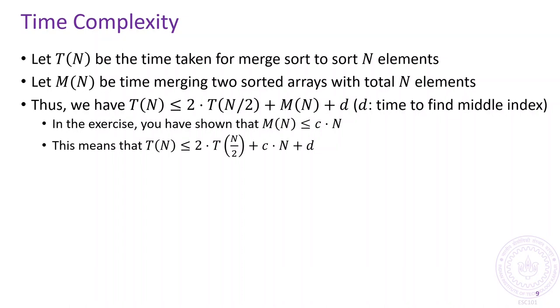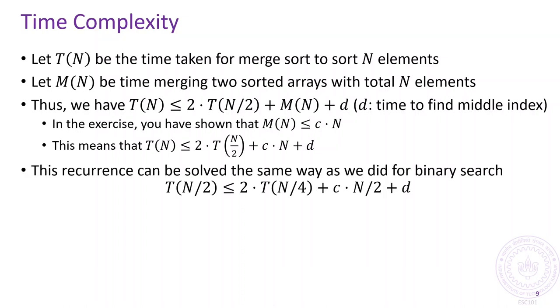In a previous exercise, you have shown that M of n is order n, which means M of n is no larger than c times n for some constant c. The recurrence relation we get here can be solved in the same way as we did for binary search. We set n equal to n by 2 and get a new relation which we plug into the original relation to get that T of n is no more than 4 times T of n by 4 plus 2 times c times n plus 1 plus 2 times d.